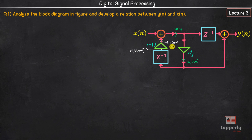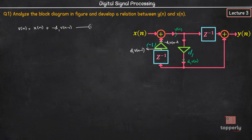Now, minus d1 times v of n-1 and x of n get added up in this adder circuit to give v of n. So the relation is: v of n = x of n + (minus d1 times v of n-1). Let us name it as equation number 1.